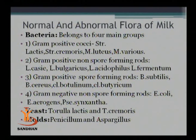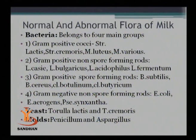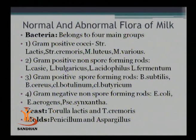The second group of bacteria is gram-positive non-spore-forming rods, which includes Lactobacillus casei, Lactobacillus bulgaricus, Lactobacillus acidophilus, and Lactobacillus fermentum. The third group includes gram-positive spore-forming rods, including Bacillus subtilis, Bacillus cereus, Clostridium botulinum, and Clostridium butyricum. Clostridium botulinum and Clostridium butyricum are anaerobic spore-forming rods, while Bacillus subtilis and Bacillus cereus are aerobic spore formers.